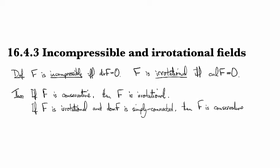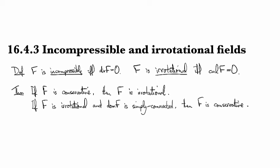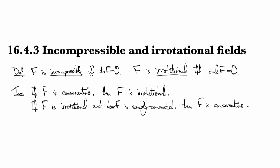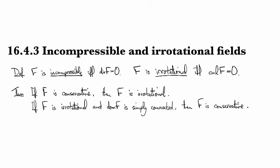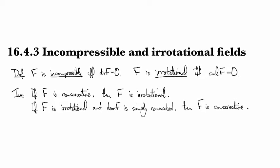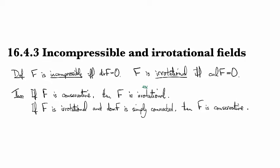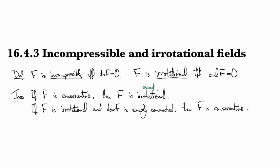And in fact, this is just new language for a theorem we've already seen. This is just the part of the path independence theorem that relates conservative with exact, because irrotational is the same thing as exact.